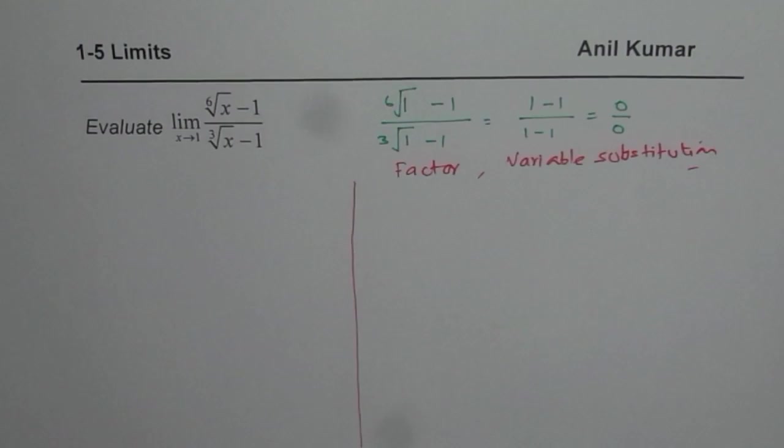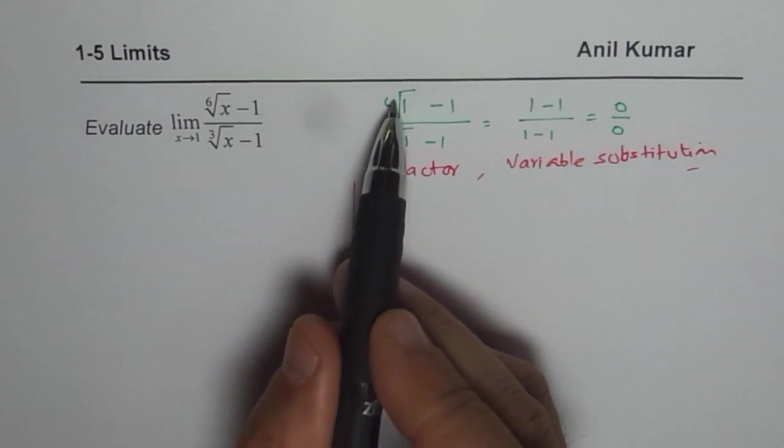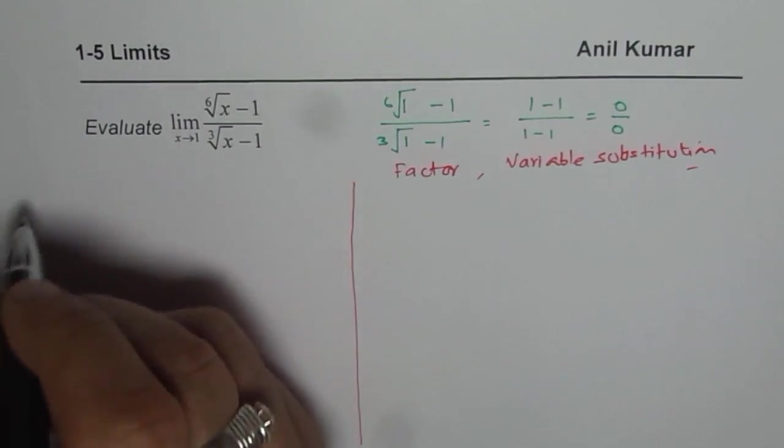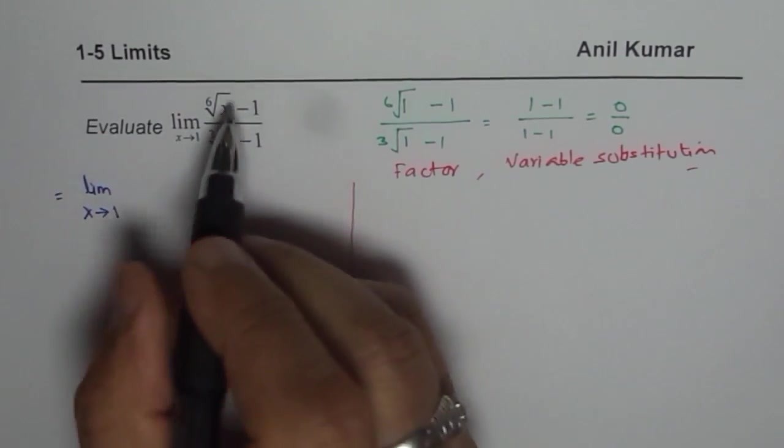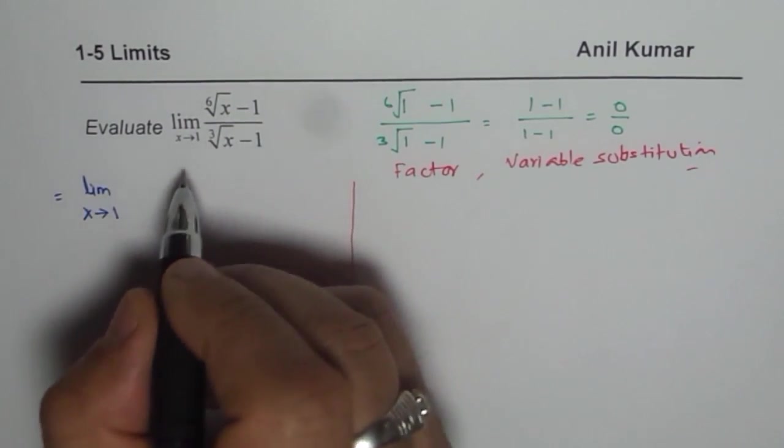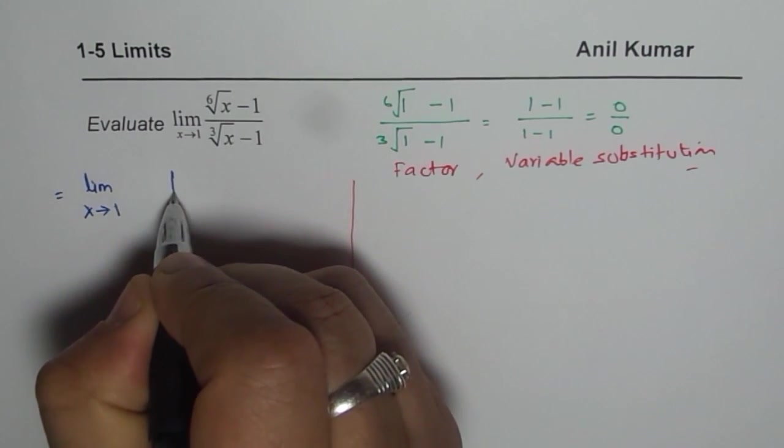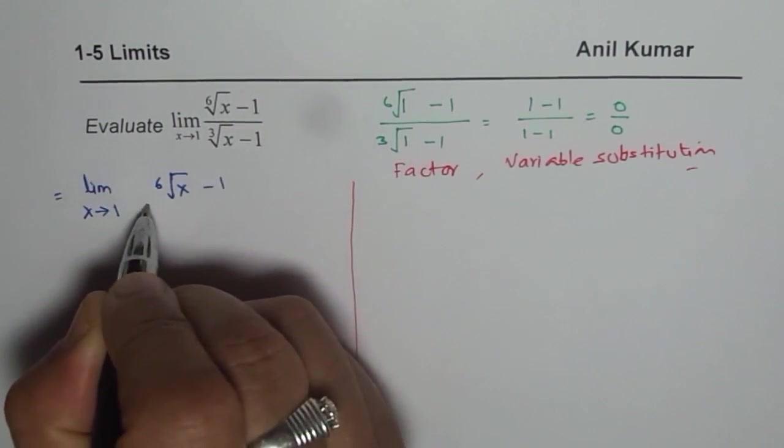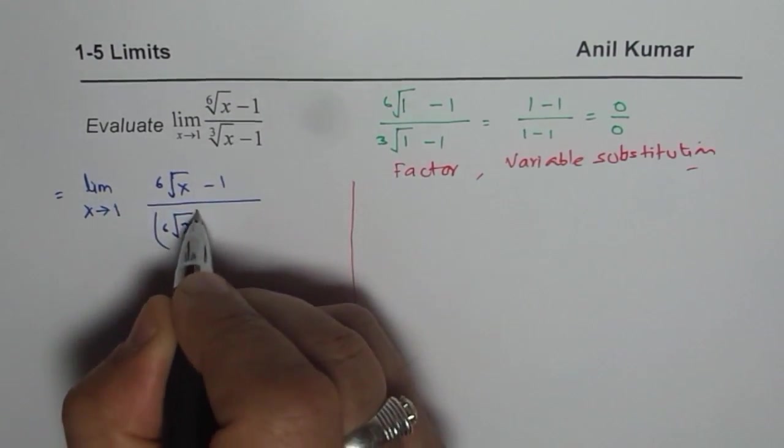So let us do factoring first. Now try to see the question as what? As what is the 6th root as compared to 3rd root? 6th root is square of this root. So let us do factoring first. We could write this question as limit x approaches 1 and I could write the 6th root as, let me write this as 6th root itself for the time being. I wanted to write 1 over 6, but that's fine. And I'll write this as 3rd root as 6th root squared. Do you get the point? Square of this, right.